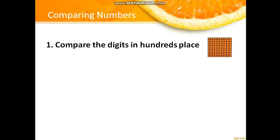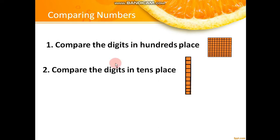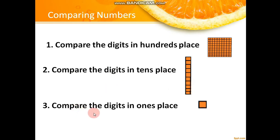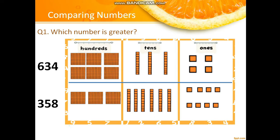In the last video, we saw how we can compare numbers. The procedure is: first, we compare the digits in the hundreds place; second, we compare the digits in the tens place; and finally, we compare the digits in the ones place. This is the procedure to find out the difference between numbers.